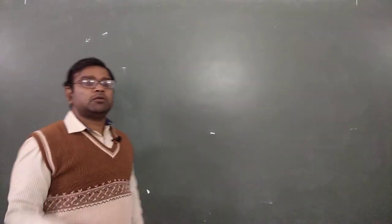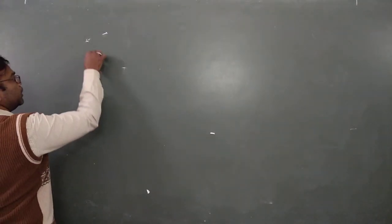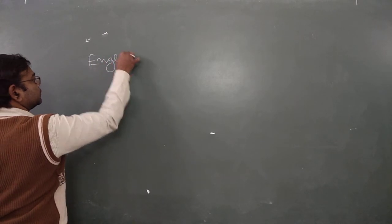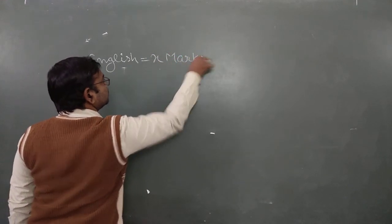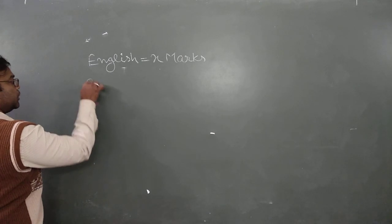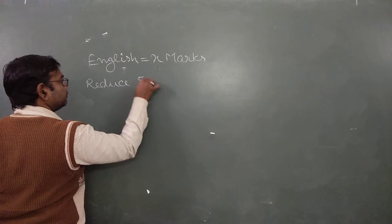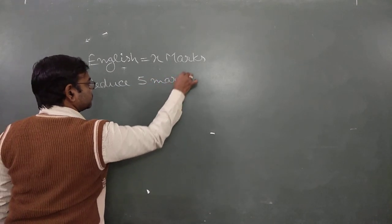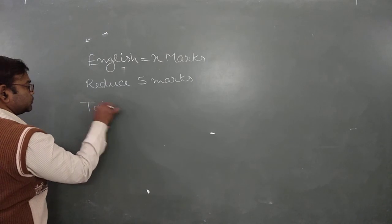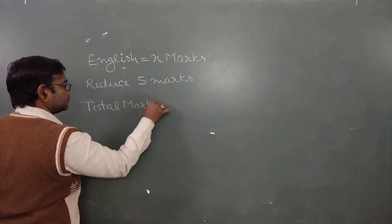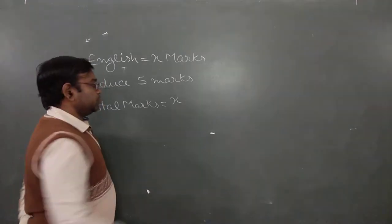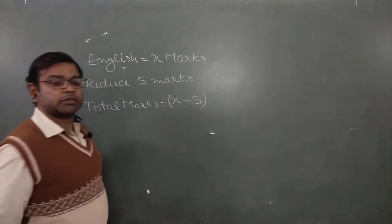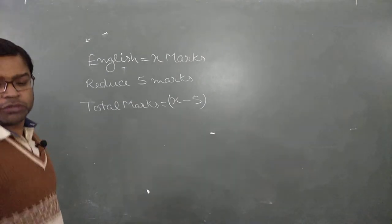Now the mark-type problem: a boy is given x marks in English, but the teacher reduces 5 marks for bad handwriting. So the new marks equal x minus 5. That is the new marks after the reduction.